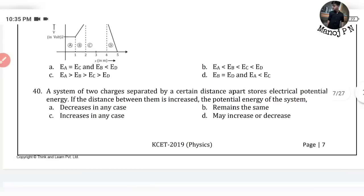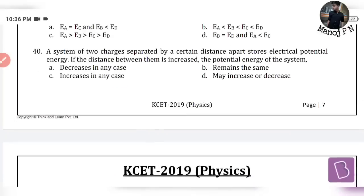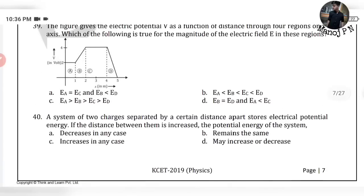40th question: A system of 2 charges separated by a certain distance stores electrical potential energy. If the distance between them is increased, the potential energy of the system increases or decreases — the answer is Option D. All the best for your physics exam. Thank you so much for your love and support. Comment in the comment section. Happy learning!